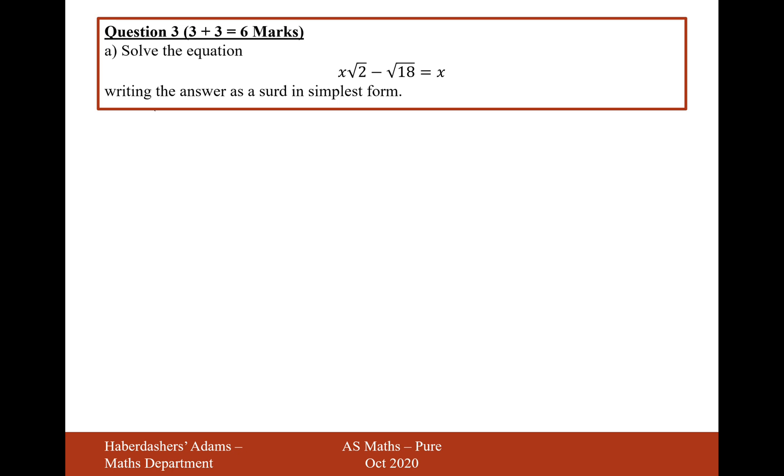So, solve the equation x√2 - √18 = x, writing the answer as a surd in its simplest form.